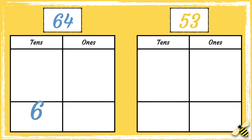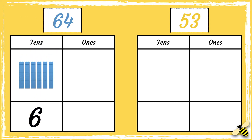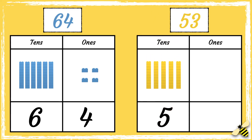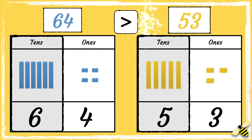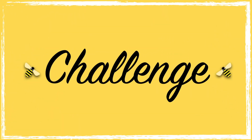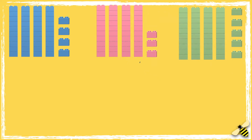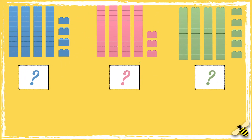Here are two more numbers. Which number is greater? The number 64 has six tens and four ones. The number 53 has five tens and three ones. Remember, when we compare numbers we look at the tens digit first. Six tens is greater than five tens, so 64 is greater than 53.